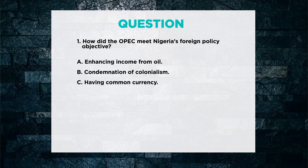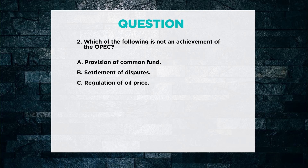Let's take some questions to test our knowledge. Question 1: How did OPEC meet Nigeria's foreign policy objective? A. Enhancing income from oil. B. Condemnation of colonialism. C. Having common currency. The correct answer is A — Enhancing income from oil. Question 2: Which of the following is not an achievement of OPEC? A. Provision of a common fund. B. Settlement of disputes. C. Regulation of oil price. The answer is B — Settlement of disputes.